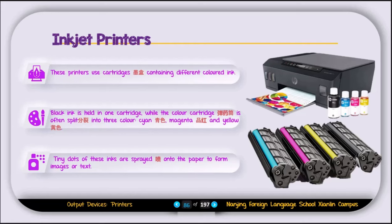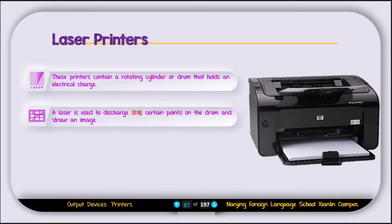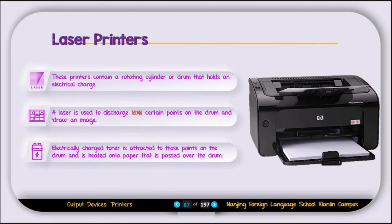The laser printer contains a rotating cylinder or drum that holds an electrical charge. A laser is used to discharge certain points on the drum and draw an image. Electrically charged toner is attracted to those points on the drum and is heated onto the paper that passes over the drum.